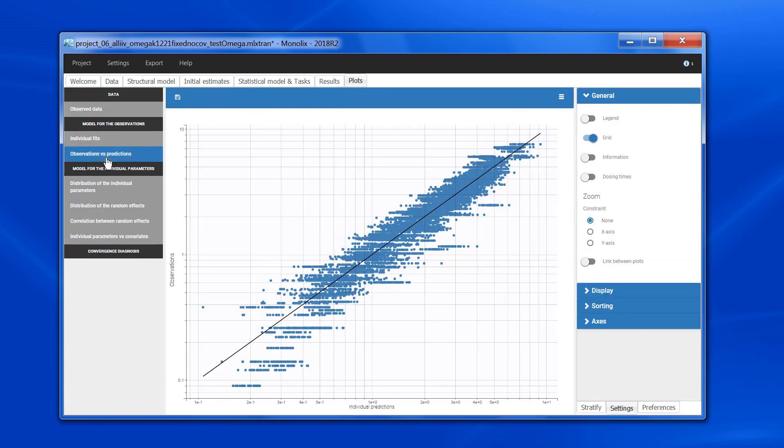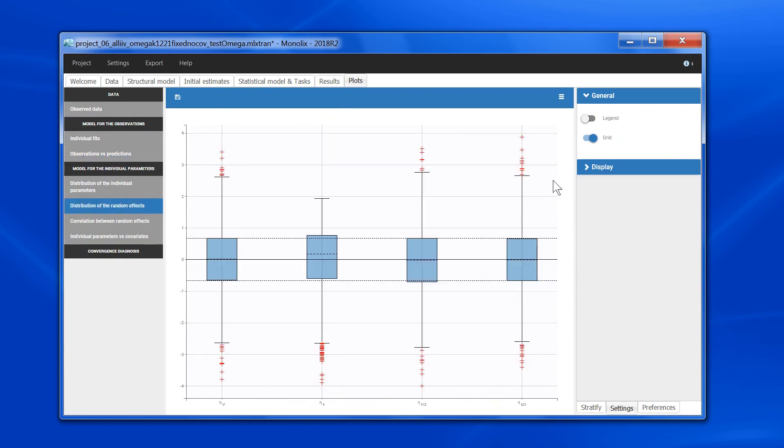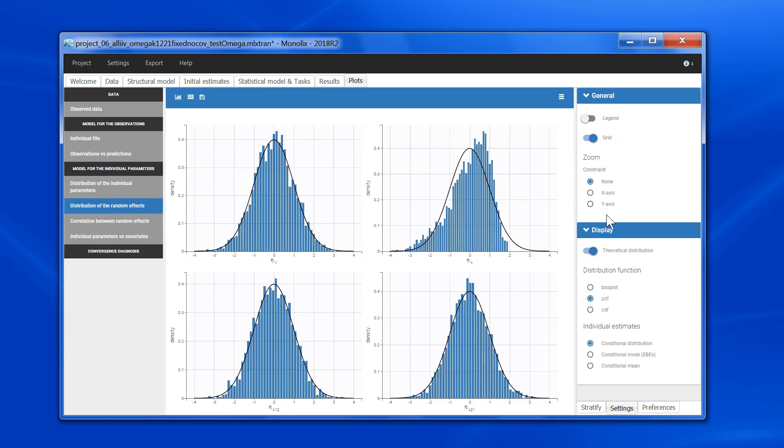If I look at the diagnostic plots, the individual fits and the obs vs. pred look good. But if I check the distribution of the random effects, looking at the PDF, we can see a model misspecification. On this plot, the black line represents the expected theoretical normal distribution, while the blue histogram represents the empirical distribution of the individual etas. Note that to calculate the etas, I have not used the EBEs, but the samples from the conditional distribution in order to avoid bias due to shrinkage.